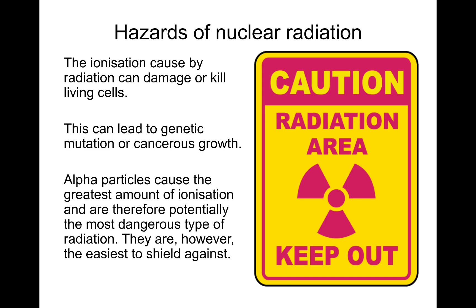The ionization caused by radiation can damage or kill living cells, which can lead to genetic mutation or cancerous growth. Alpha particles cause the greatest amount of ionization and are therefore potentially the most dangerous type of radiation. They are, however, the easiest to shield against - alpha particles can be stopped by a couple of centimetres of air, a sheet of paper, or plastic gloves. Alpha becomes excessively dangerous once it's inside the human body.